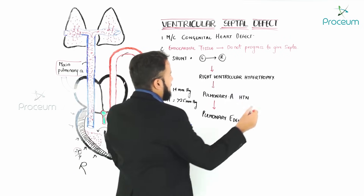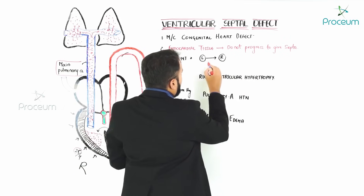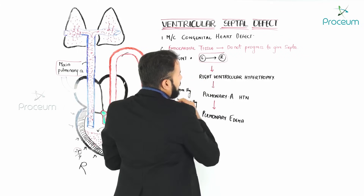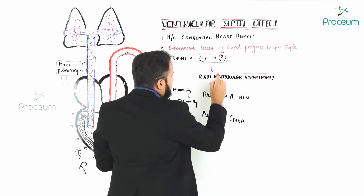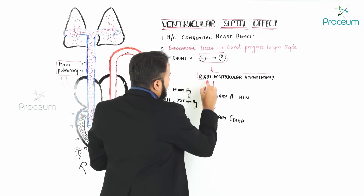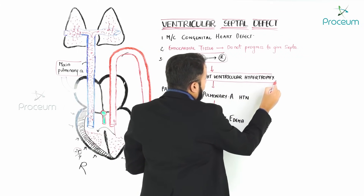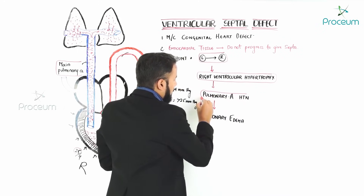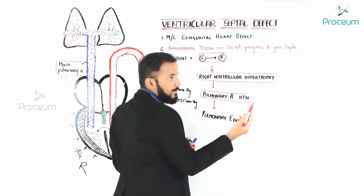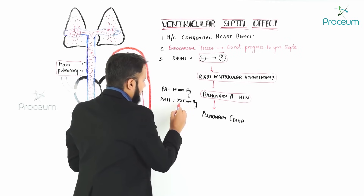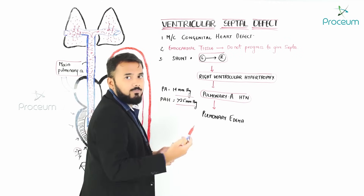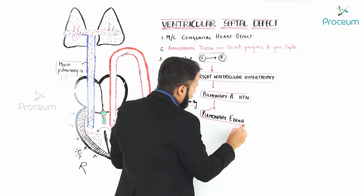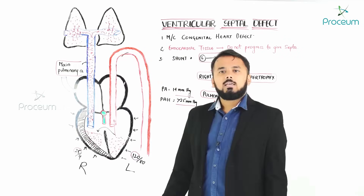To recap: the patient has a left-to-right shunt, which causes excess blood in the right ventricle, leading to right ventricular hypertrophy. This then causes pulmonary artery hypertension — greater than 25 mmHg — which finally leads to pulmonary edema.